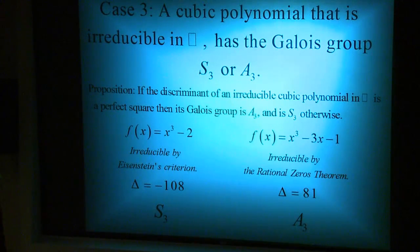Let's take into account f(x) = x³ - 2. This is irreducible by Eisenstein's criteria and has the discriminant negative 108, which is not a square. Hence, its Galois group is S3.